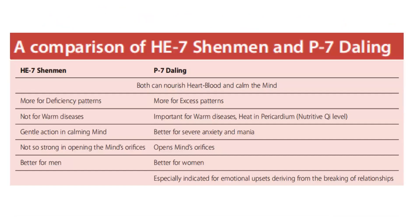Comparing Heart 7 with Pericardium 7: both can nourish heart blood and calm the mind. Heart 7 is more for deficiency patterns, not for warm diseases, a gentle option in calming the mind, not so strong in opening the mind's orifices, and is better for men. Pericardium 7 is more for excess patterns, important for warm diseases, heat in the pericardium at the nutritive Qi level. PC7 is better for severe anxiety and mania, opens the mind's orifices, better for women, and especially indicated for emotional upsets deriving from the breaking of relationships.